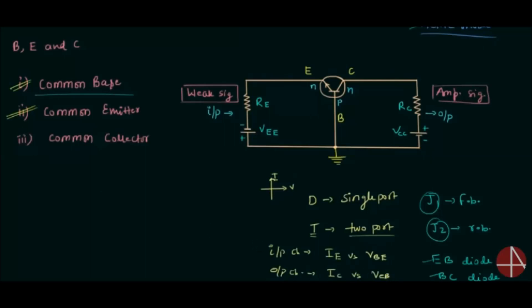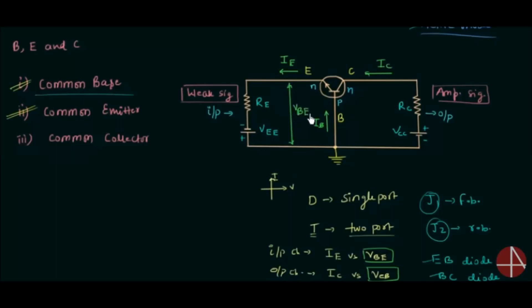The next thing is to find the direction of currents IE, IB, and IC, and what the voltages VBE and VCB are. From the symbol of the transistor, you can see the direction of emitter current IE, the direction of base current IB, and the direction of collector current IC. If you don't know how we obtained these directions, please watch the previous lecture. VBE is this potential, and if you neglect RE, VBE equals VEE. In the same way, VCB is the potential difference across the base and collector, and VCB equals VCC if we neglect RC.